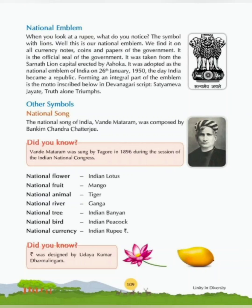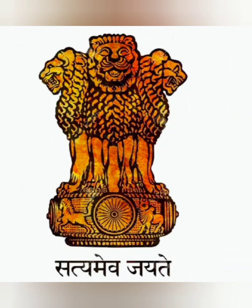Forming an integral part of the emblem is the motto inscribed below in Devanagari script — Satyameva Jayate — which means 'Truth alone triumphs.' In the emblem, there are four lions, of which one is hidden at the back and not visible. Below the lions is a wheel or chakra; to the left is a horse and to the right is a bull. The emblem can be seen on all government letters, postage, currency notes, and coins.